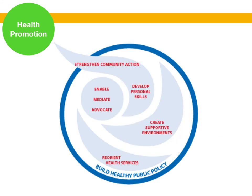Based on these principles, the Ottawa Charter identified five strategies for health promotion. The first is community action, which involves increasing ownership and control of communities by setting priorities, making decisions, planning strategies, and implementing them at the community level. The second involves developing personal skills — providing education, information, and individual skills to pursue healthy behaviours and healthy lifestyle choices.